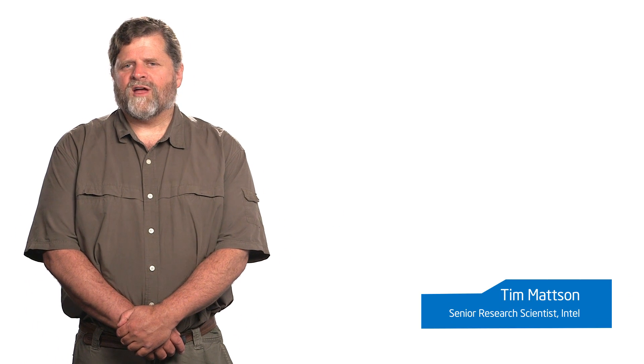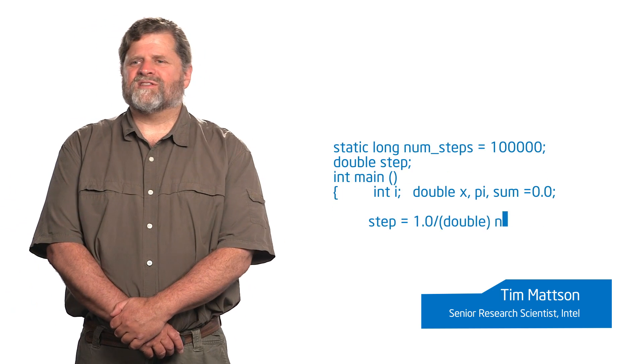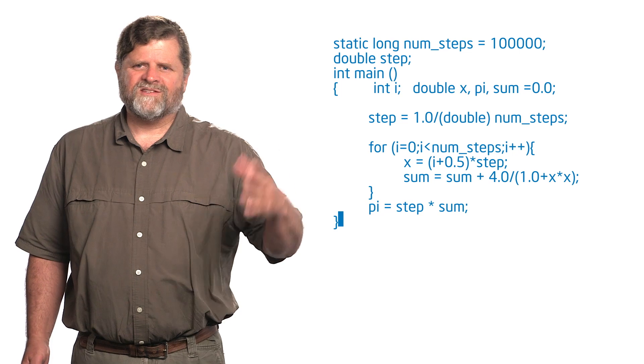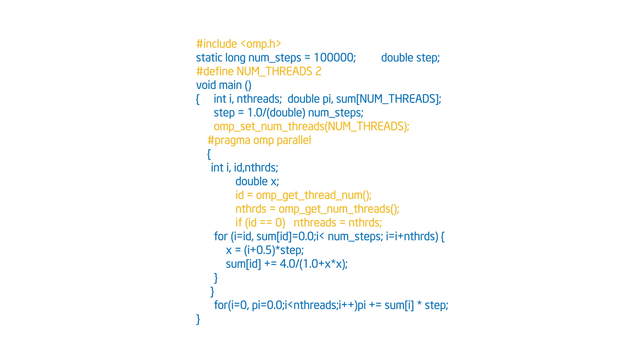So now we're ready to discuss our simple pi program and why it sucks. Just to remind you, here is the code of the serial pie program that we start with. To any of you who've done anything with C, this should look pretty straightforward and simple. So here is my version of the pie program. I'm going to walk you through everything I did and explain it as I go.